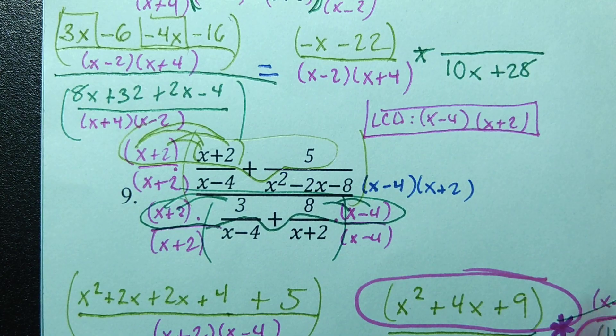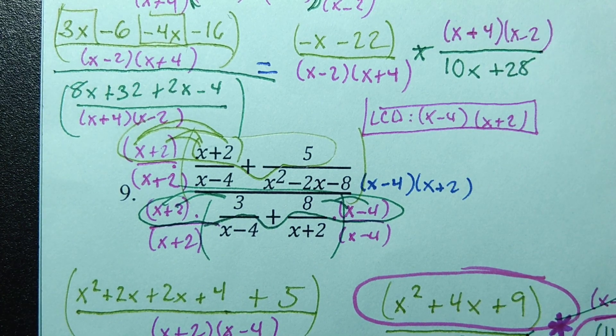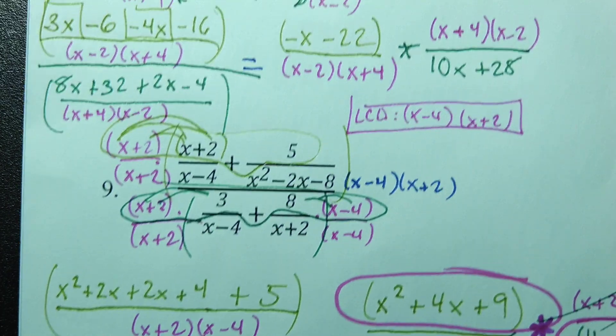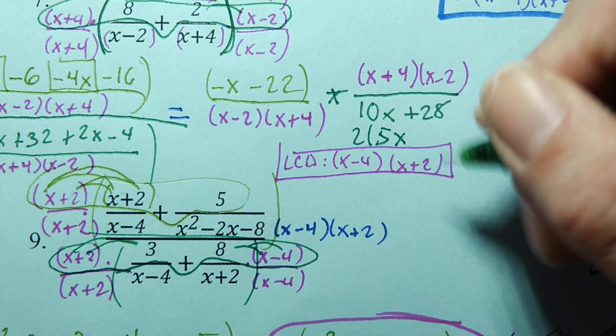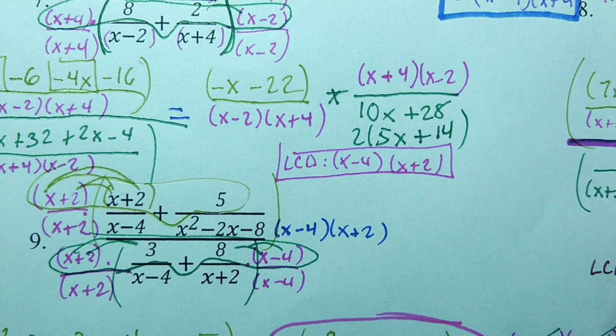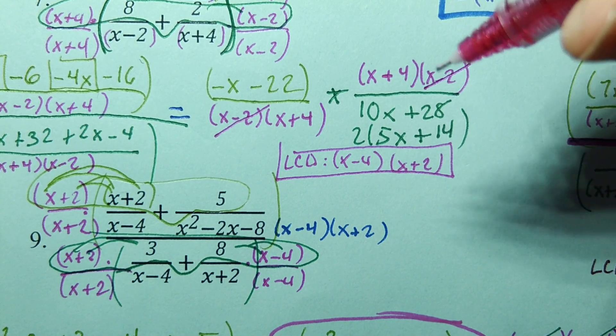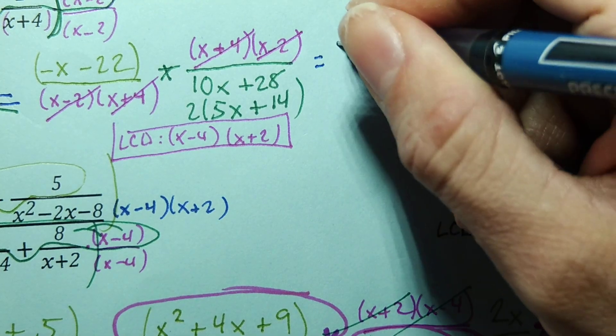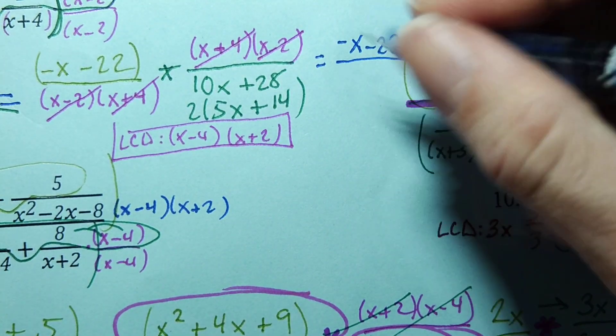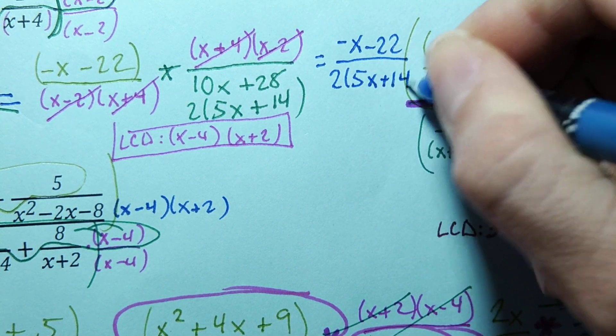And then on the top, we have the LCD. Now, the 10x plus 28, we can actually take a GCF out. So, let's take a 2 out, and that will leave us with 5x plus 14. So, is there anything we can cross-simplify at this point? x minus 2 and x minus 2. x plus 4 and x plus 4. Final answer is negative x minus 22, all over 2 times 5x plus 14.